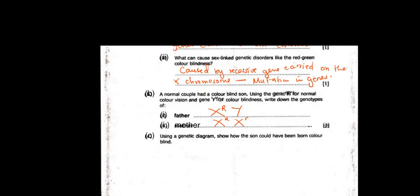Question C says: using a genetic diagram, show how the son could have been born colorblind. I'm going to give you an opportunity to try out the question. You can pause the video, try to do it on your own, and then play it when you're done.